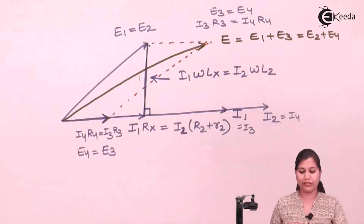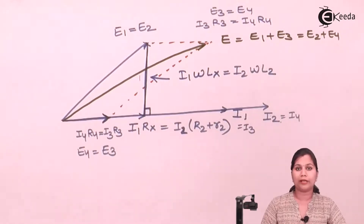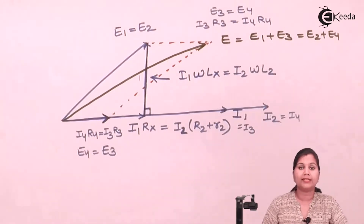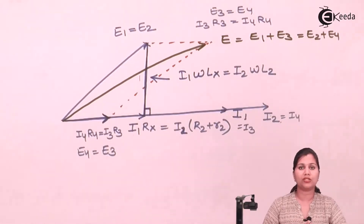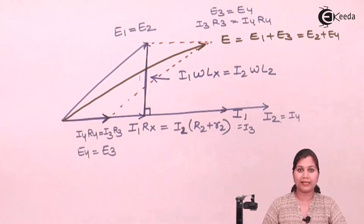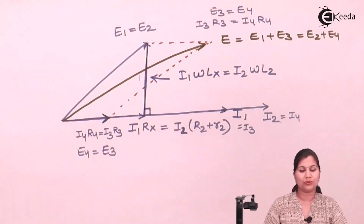In this video, we have studied the Maxwell inductance bridge, which is used for the measurement of unknown inductance by comparing it with a known standard inductance. This bridge is the most basic and simple bridge used for the measurement of inductance. We studied its circuit, its balance equation, the value of the unknown inductance, and its phasor diagram. I hope this topic is now clear to you. Thank you.